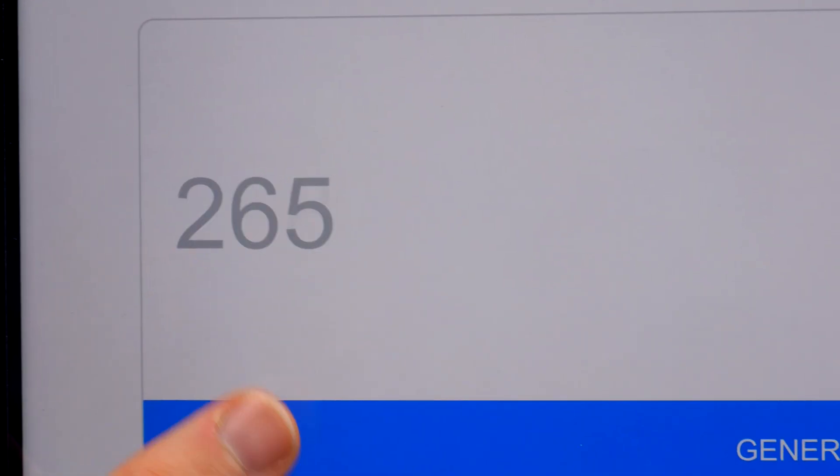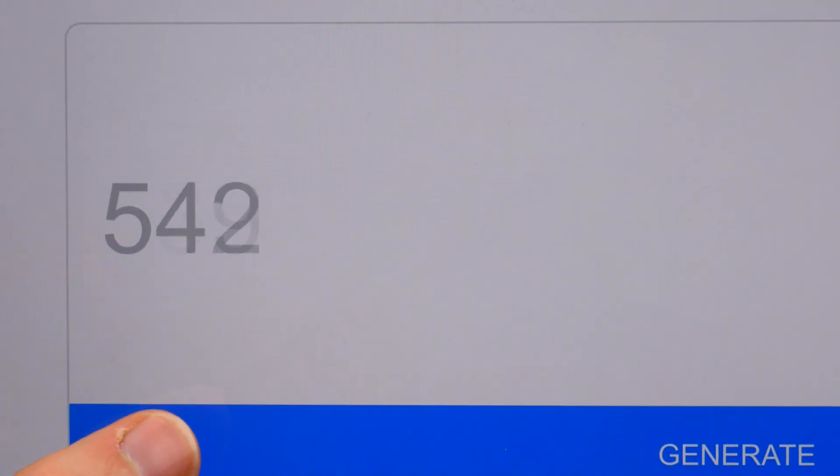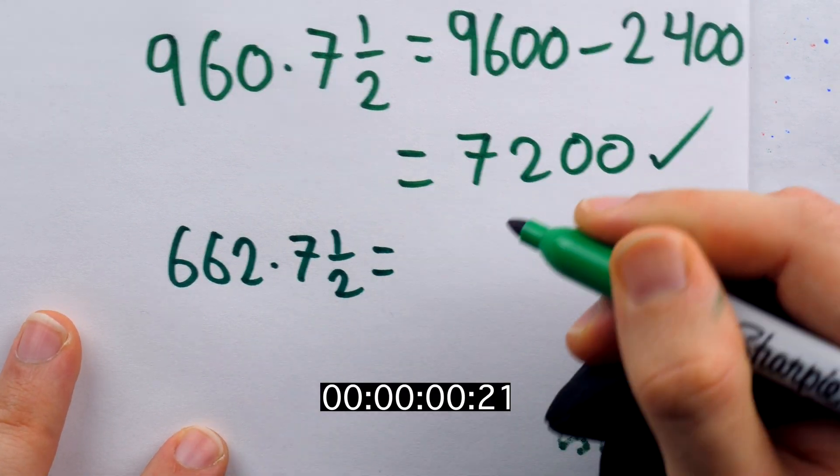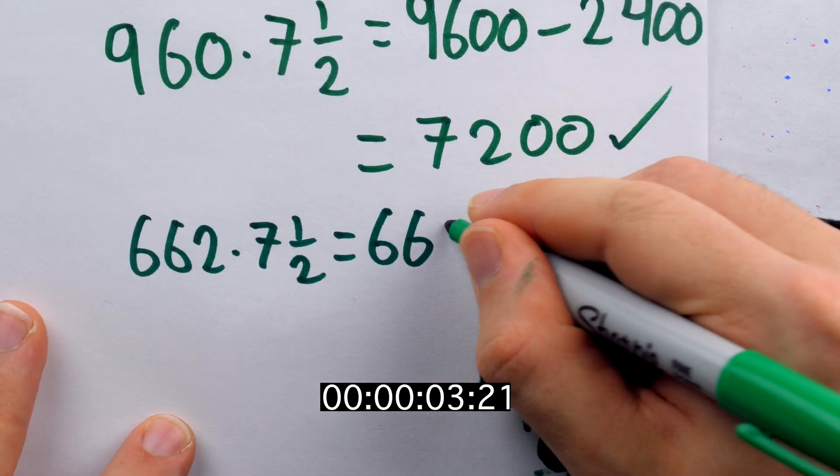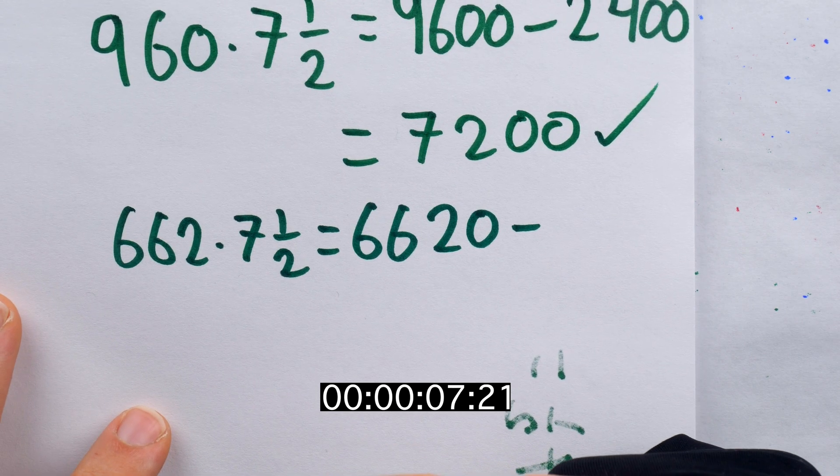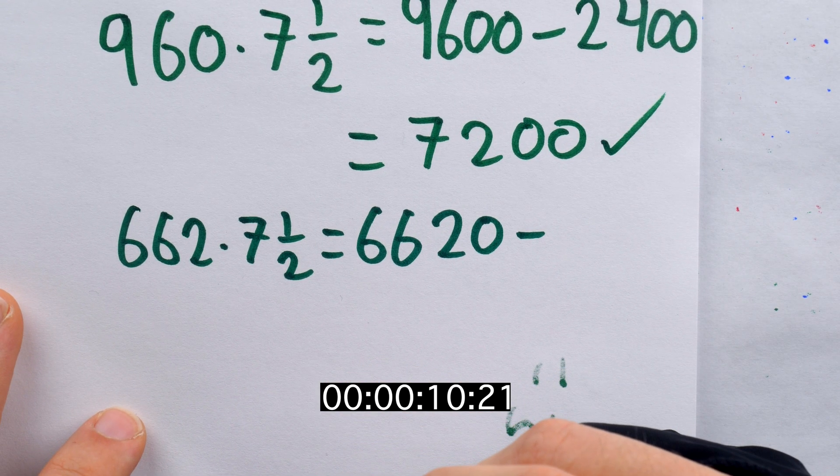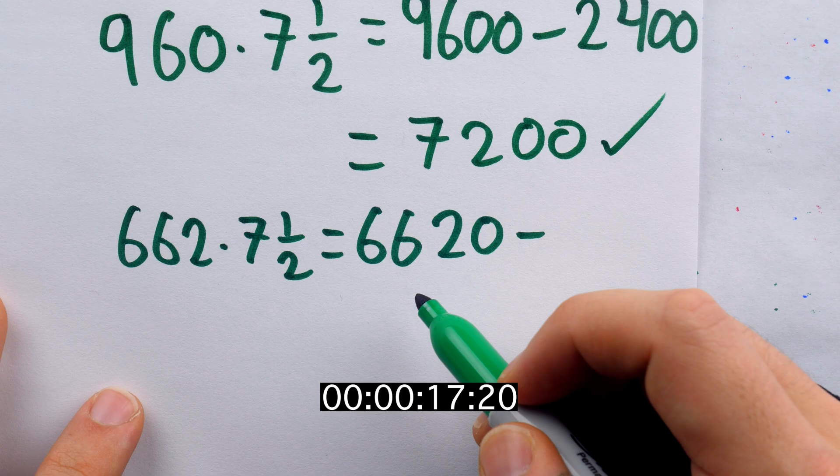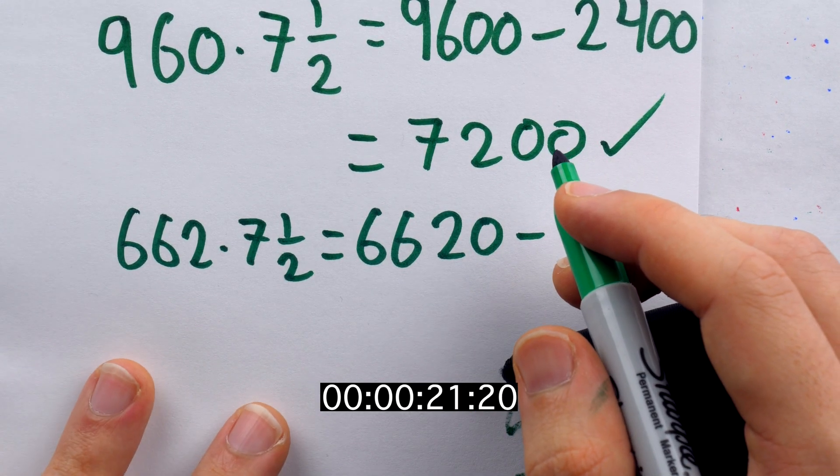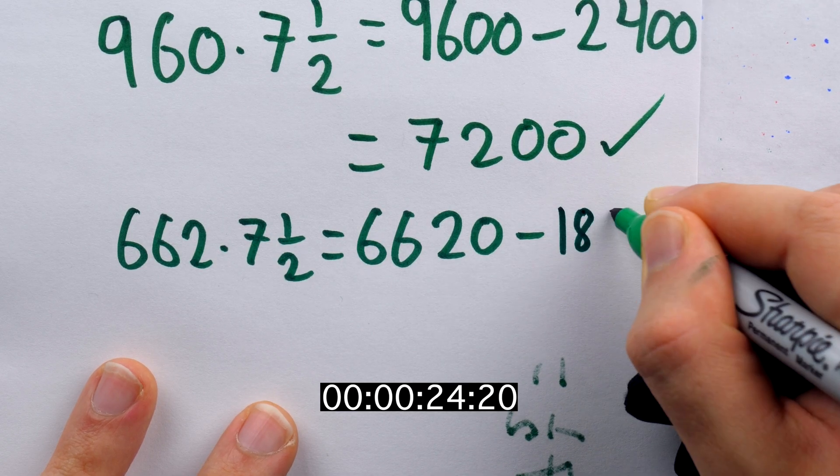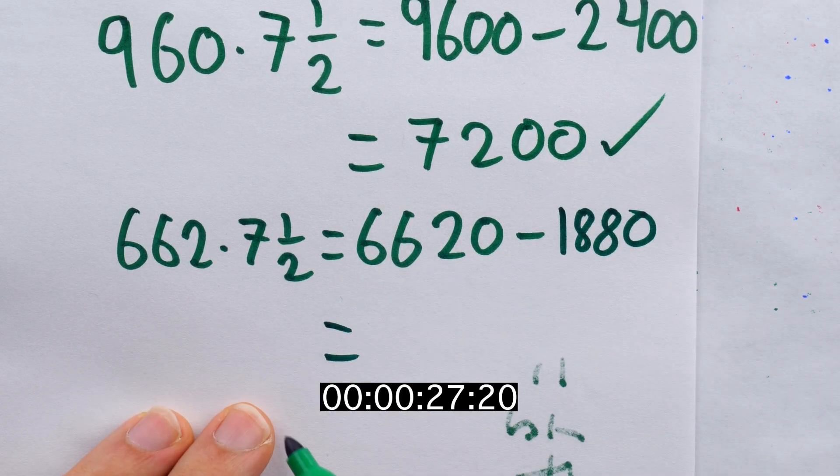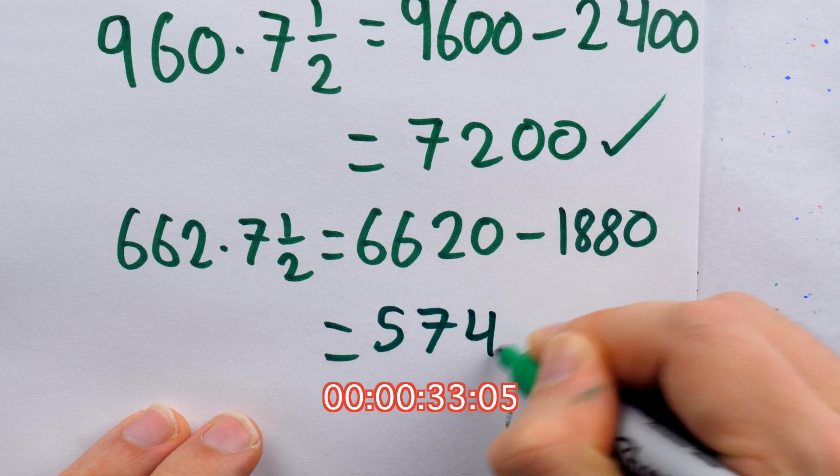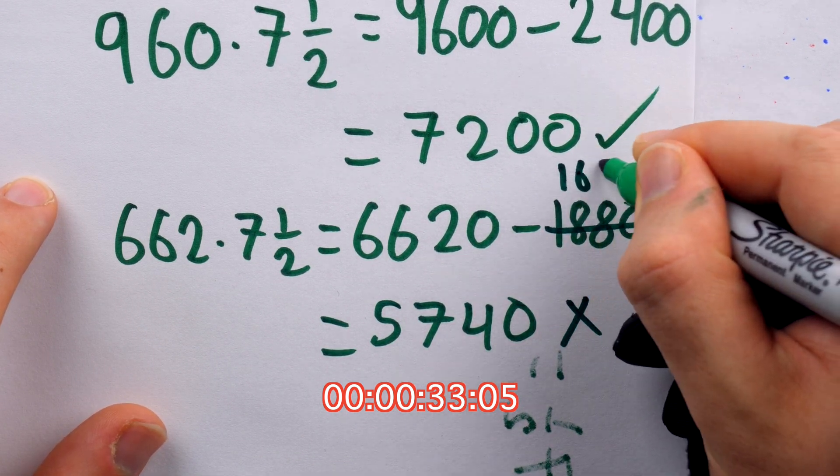For our second number, we have 662. I'm going to multiply this guy by 10 and then take away a fourth of that. Multiplying by 10 gives us 6,620. What is a fourth of 6,620? 1,880, I think. And then if we do the subtraction, it is going to be 5,740. I don't know how I feel about that. That is wrong. I screwed my division way up. This should have been 1,655.